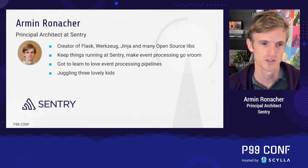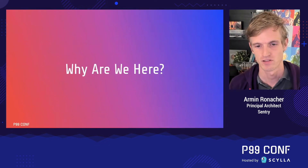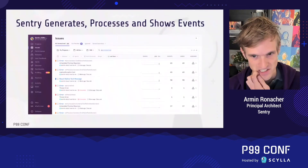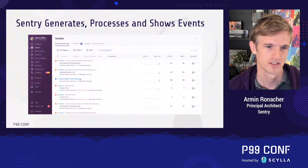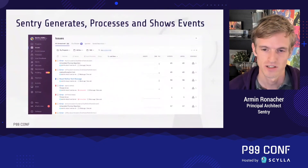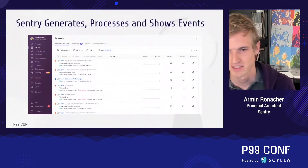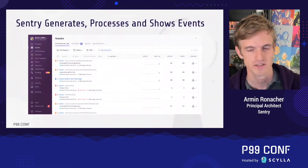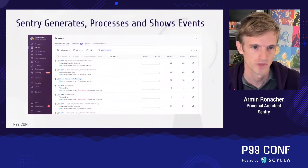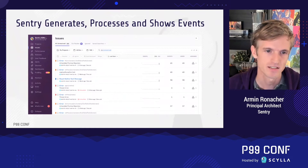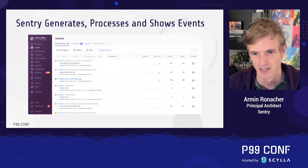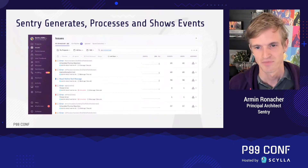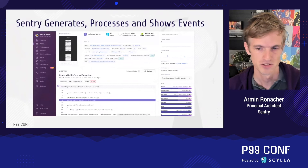I don't want to talk too much about the product but I want to give you a basic overview of what it is that we're doing so you have an idea of the context of this presentation. If you go into Sentry, which is a crash reporting and application monitoring product, you'll find a list of error events or transaction events that are coming in and are grouped together by commonality. Every single crash report that comes in will end up in a group, which means we have to do a whole bunch of processing as events come in.